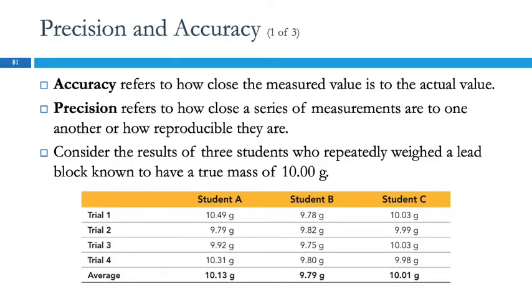Accuracy and precision are words we use to describe data, and they reflect the quality of the data. We would like for our data, our measurements, to be accurate and precise, but these two things are actually independent of each other.